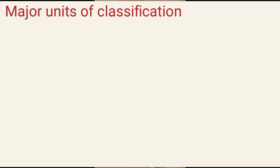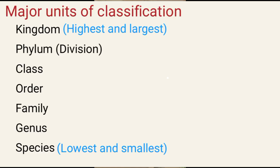We need to know the major units of classification. There are seven major units of classification. We have kingdom, which is the highest and the largest, followed by phylum or division, followed by class, order, family, genus, and species. Species is the lowest and the smallest.